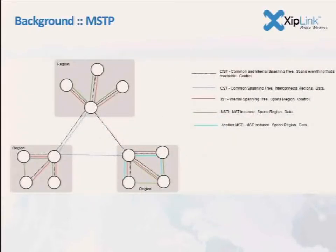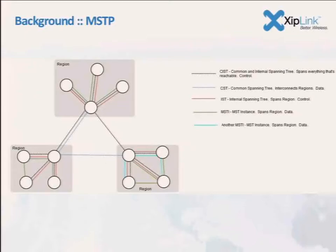Here's another representation of the same concept. Within the MSTP region, you have the Common and Internal Spanning Tree — the CIST — shown as dashes going between root bridges, and then the MSTIs are the multiple spanning tree instances that operate inside the bridge. From the outside, each of these regions behaves just like a normal bridge.